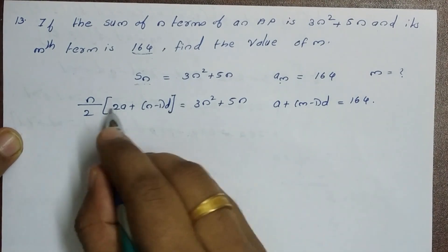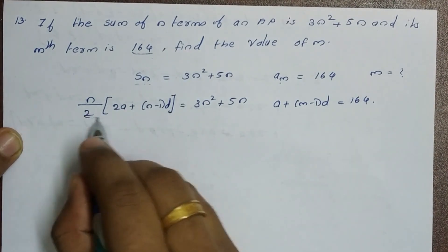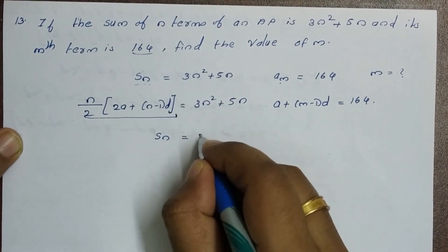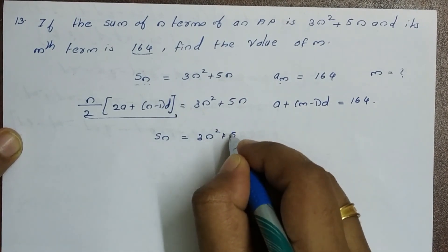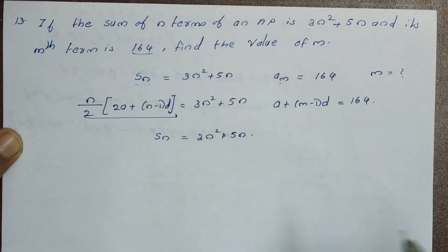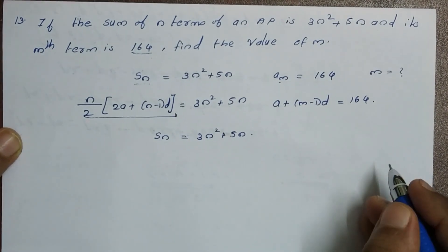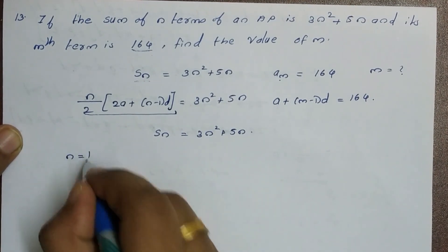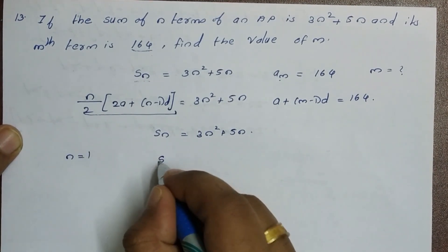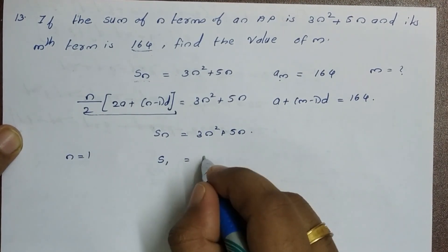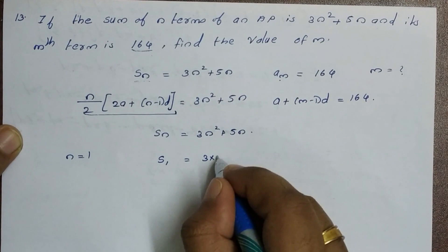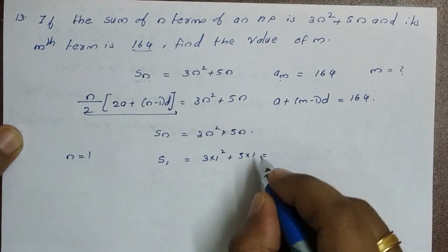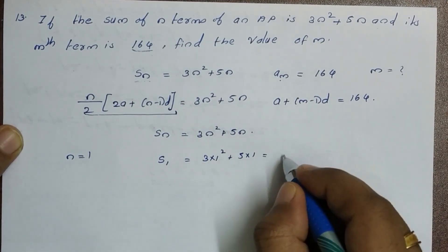So we have SN = 3N² + 5N. When N = 1, S1 = 3(1)² + 5(1) = 3 + 5 = 8.